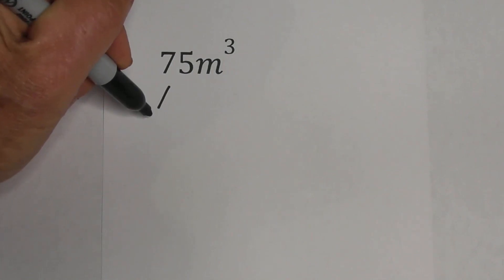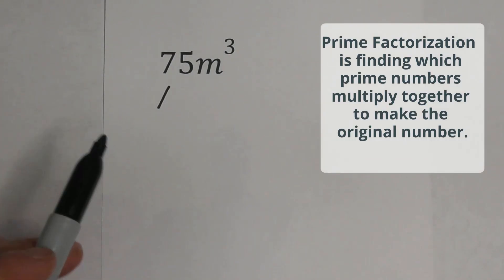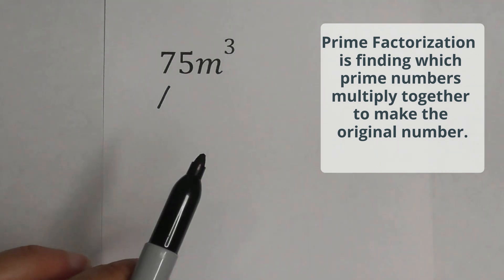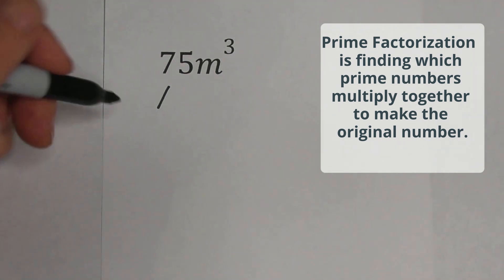Let's complete prime factorization with some numbers that have variables and exponents. I like to use a factor tree. Prime factorization is finding all the prime numbers that multiply together to equal the original number.